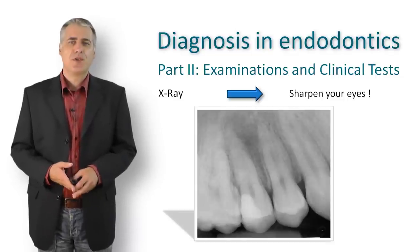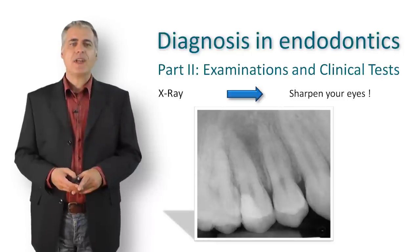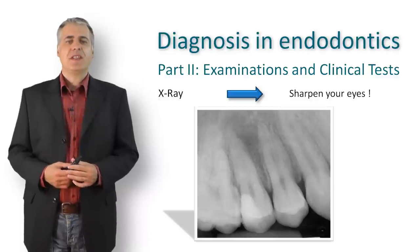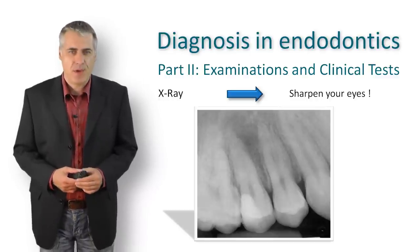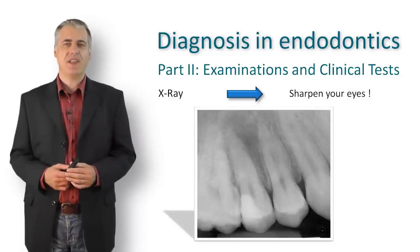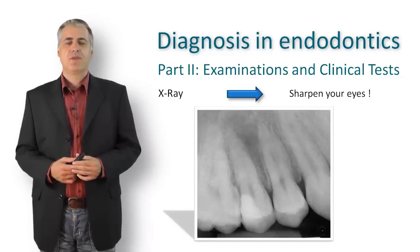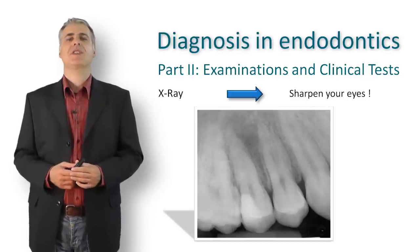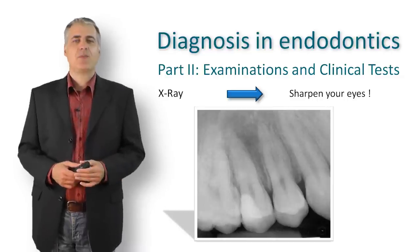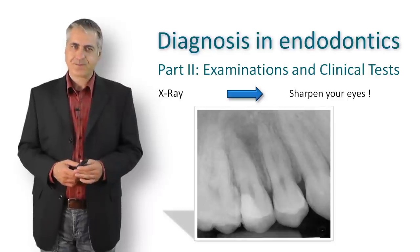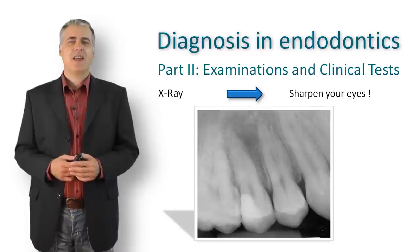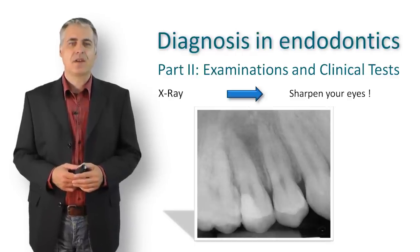Another example: two upper premolars where a radiolucency is detected between them. The dental history reported a recently placed filling on the second premolar; percussion test was positive and it did not respond to the pulp test. The first premolar responded normally and had a negative percussion test — the same with the molar. So the second premolar was identified as the offending tooth.